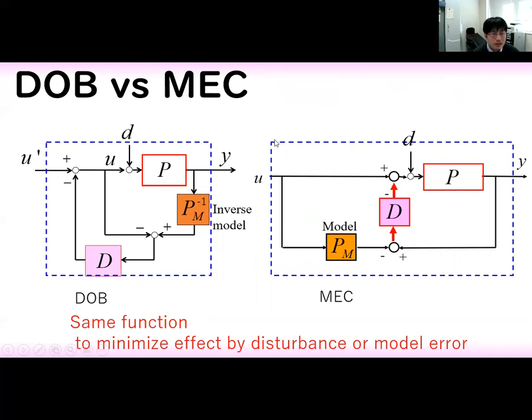I introduce the difference between disturbance observer DOB versus model error compensator MEC. These two systems have the same function: to minimize the effect of disturbance or model error.